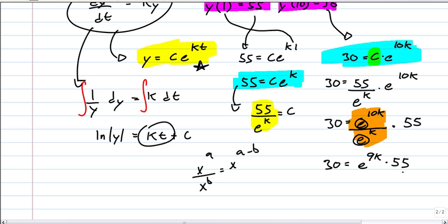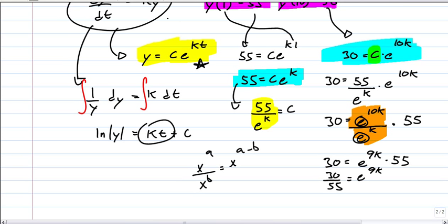You got to solve for k. So divide both sides by 55. So 30 over 55 equals e to the 9k. You're going to natural log both sides. So when you natural log e to the 9k, you just get 9k. So natural log of 30 over 55, and then divide by 9. So k equals natural log of 30 over 55 divided by 9, which is approximately natural log of 30 over 55, get that result, divide it by 9, negative 0.0673.